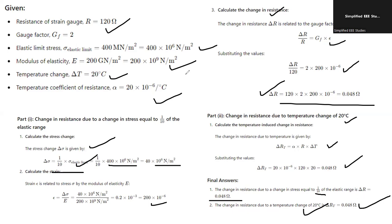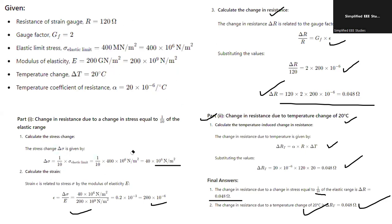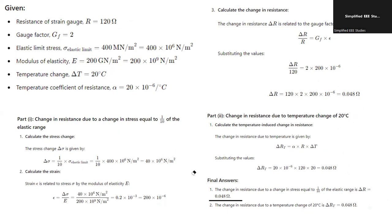Practice this problem using the given data. Read the question carefully, apply the formula for modulus of elasticity, calculate delta R using the standard formula, and compute the change in resistance due to temperature change. These are the three segments of this problem — go through each individually. Pause the video, solve it yourself, then come back to verify. If you solve this correctly, you will get five marks.